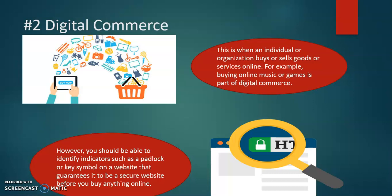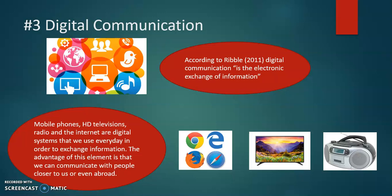Number two, we have digital commerce. This is when an individual or organization buys or sells goods or services online. For example, buying online music or games is part of digital commerce. However, you should be able to identify indicators such as a padlock or key symbol on a website that guarantees it to be a secure website before you buy anything online. Please be careful before you purchase anything online — don't just give out your personal information without ensuring that the website is secured.